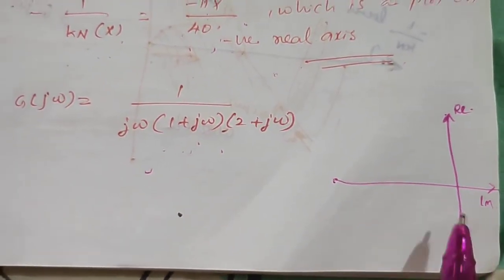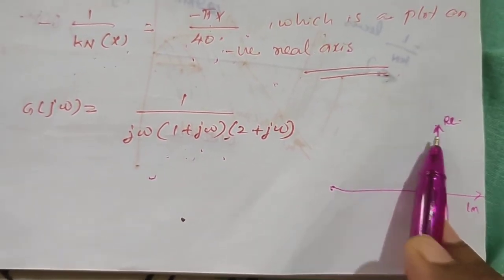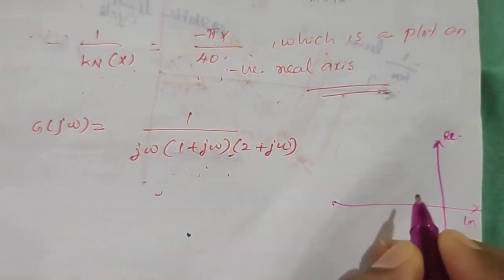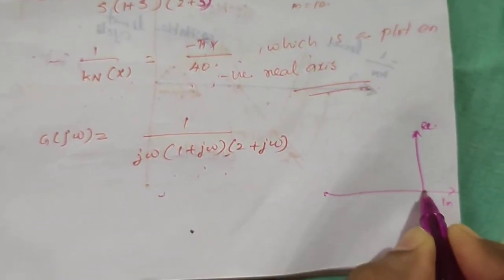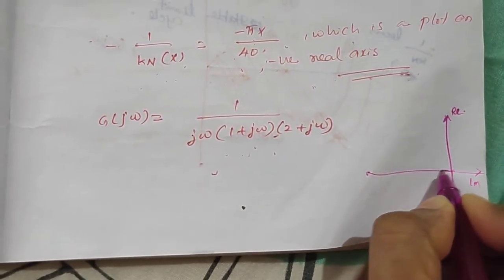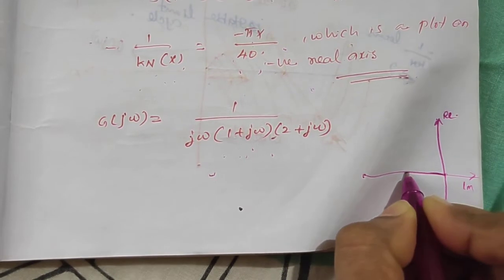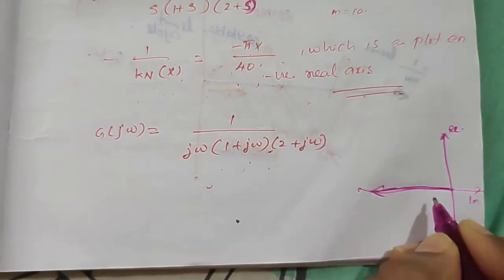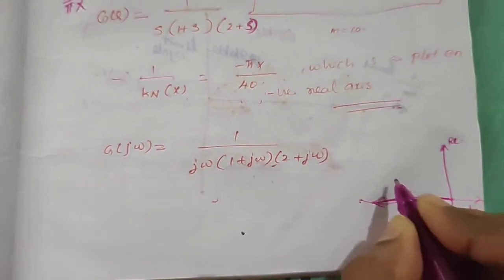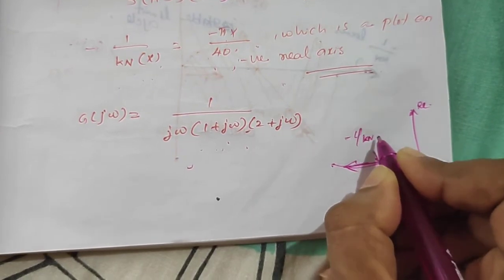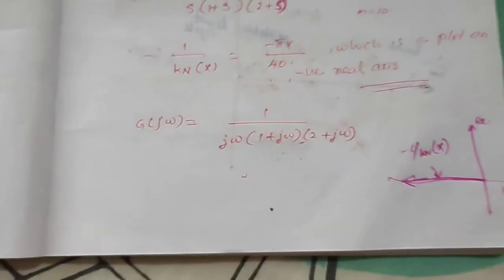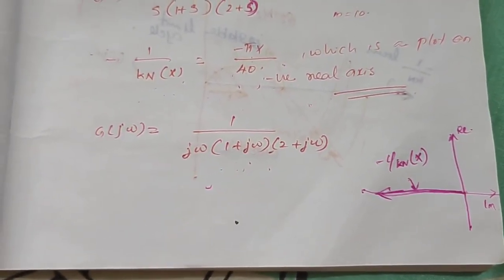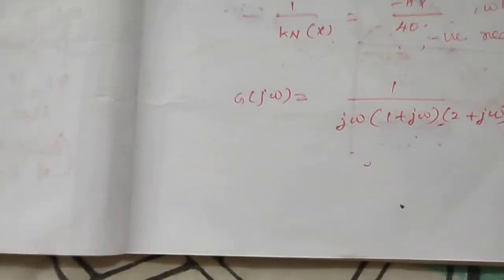If we plot this on an imaginary-versus-real graph, with X starting from 0 to infinity, the plot starts near the origin and extends along the negative real axis. This is the minus 1 by KN(x) locus — a line on the negative real axis.